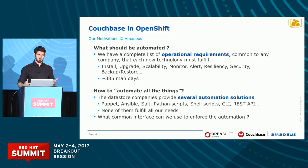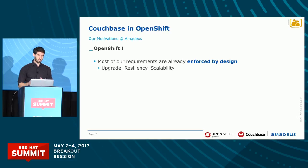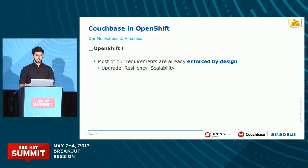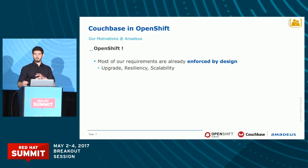So we tried to think about what was already available in the industry to provide this command interface. We thought: we're using OpenShift for our applications, so probably we can try to use it as well for our data stores. The good thing is that most of our requirements — installing, upgrading, scaling out — are already enforced by design. As soon as you deploy something in OpenShift, you already have a clear procedure to do your upgrade, to scale out, and to be resilient. You get your pods dynamically rescheduled on another node. So that's already enforced by design in OpenShift.